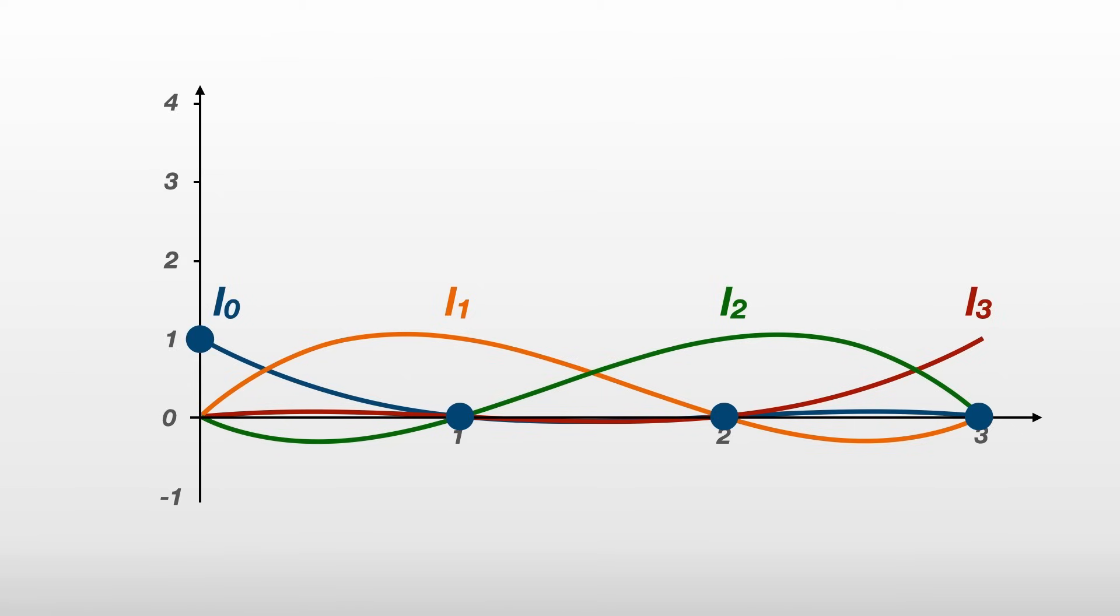The second polynomial L_1 is equal to 1 at the second node and 0 at all the others. And this pattern continues for all these so-called Lagrange polynomials.